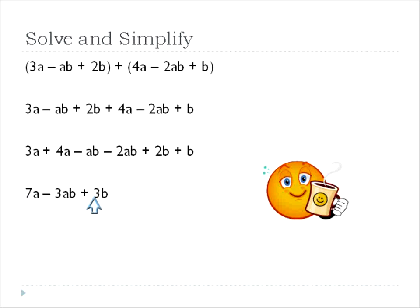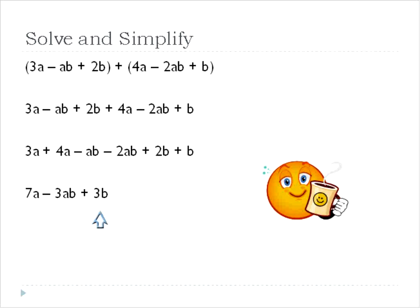Again, this is our final answer. You can't join these things together — it's like having 7 of something, minus 3 of something, and then positive 3 of something else. Because they are different variables, you can't join them together, just like you can't join together different types of food.